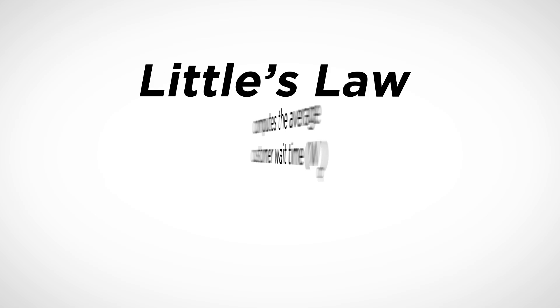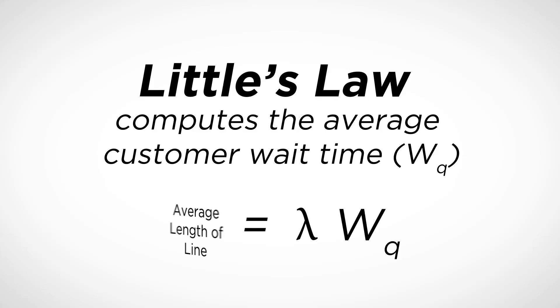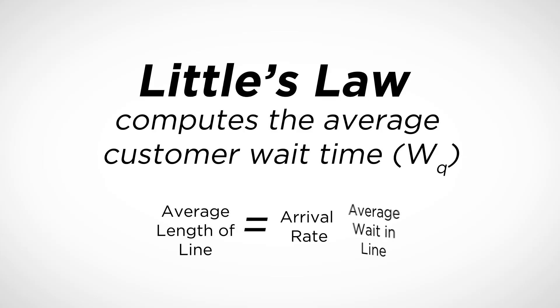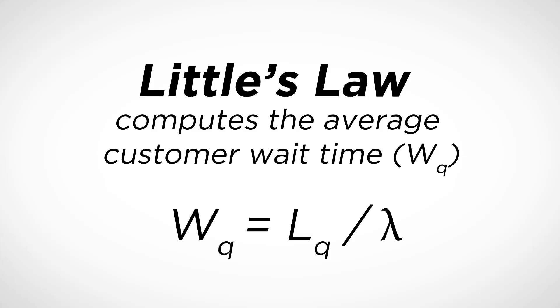Next, we can use a formula referred to as Little's Law in order to determine the average amount of time a customer has to wait in the queue. Little's Law is given in the following form in the context of queuing: LQ equals lambda times WQ. That is, the average number of customers waiting in the queue is equal to the arrival rate times the average amount of time that a customer has to wait in the queue. From the table, we already know how to determine LQ, and the arrival rate is given to us in the problem. Therefore, we can re-engineer Little's Law: the average amount of time a customer has to wait in the queue equals the average number of customers in the queue divided by the arrival rate.